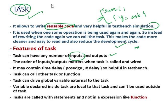Inside a task we have inputs and outputs, and we can have any number of them. The order of inputs and outputs matters when the task is called. The task may also contain time delays — such as a hash-delay number — and positive or negative edge triggers. That is one of the reasons tasks are helpful for testbench simulation.